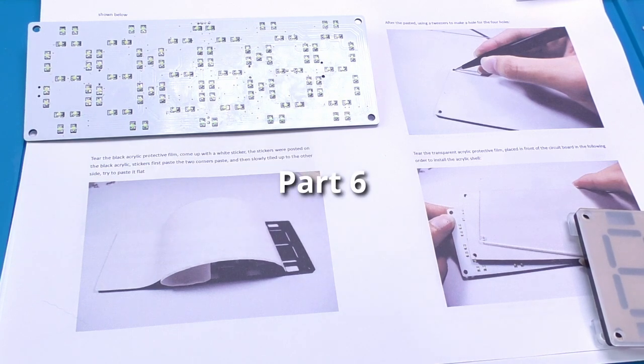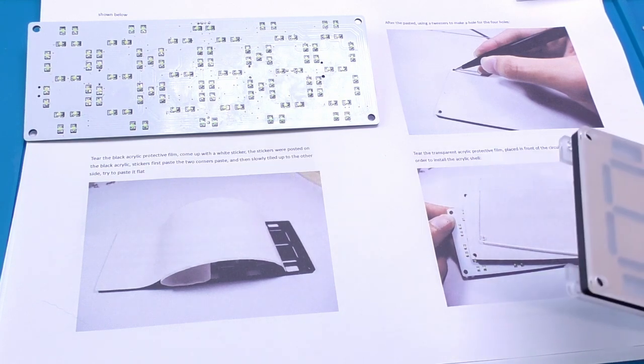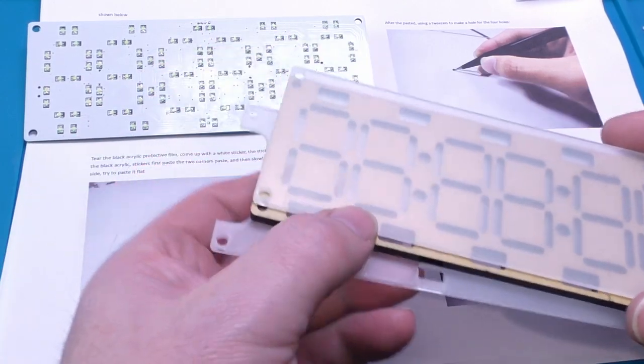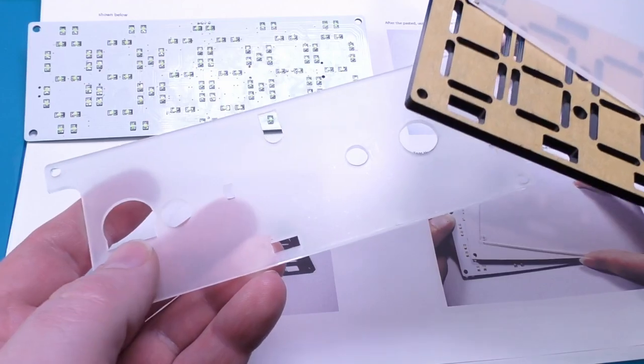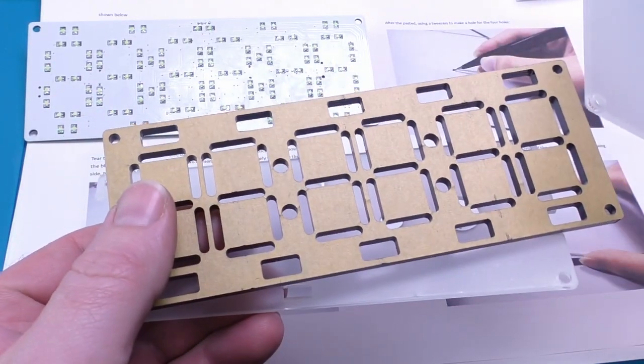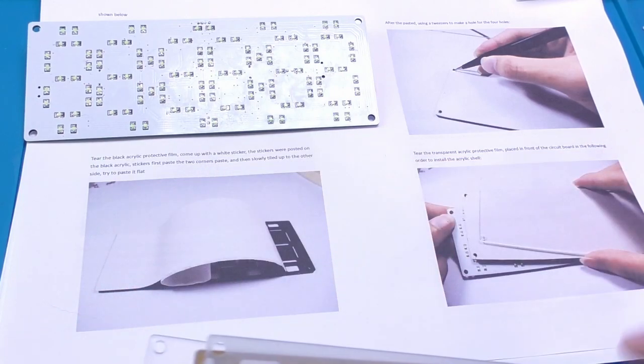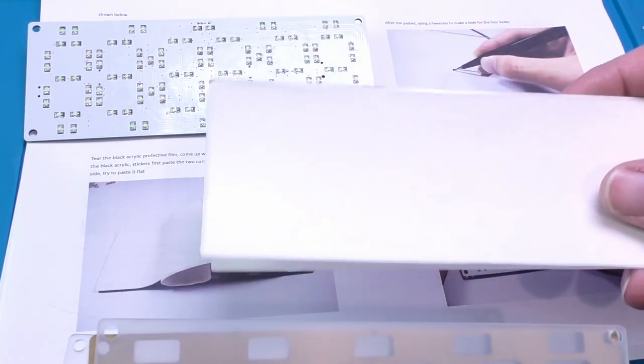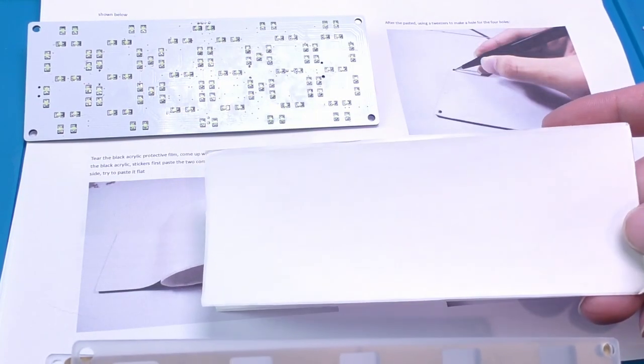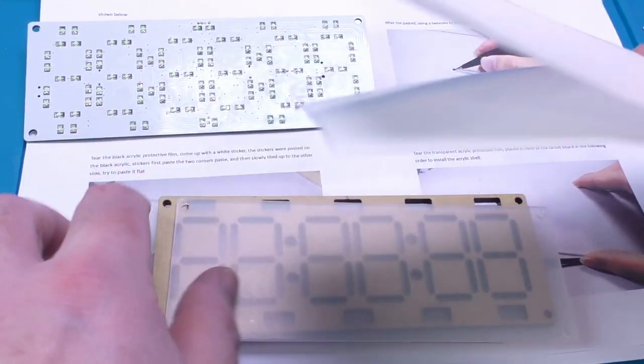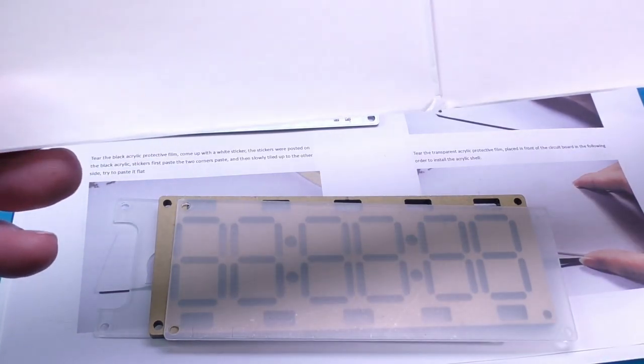So now we're moving on to the casing for this clock. We've got various parts - I think that's the back, that's like a frame, and then that's a front. But we also have a piece of white sticker paper. They're actually giving us what looks like two of them.